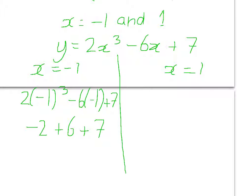Minus 6 times minus 1 is plus 6 plus 7. So to tidy that up, minus 2, add 6 is 4, add 7 is 11. So this coordinate is minus 1, 11.